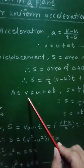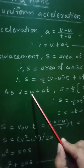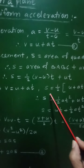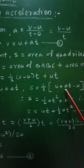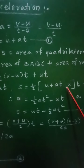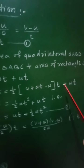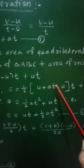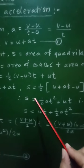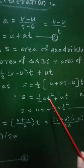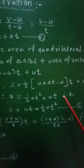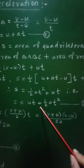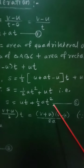From the first equation, v = u + at. Therefore, v is replaced by u + at. So S = half(u + at − u)t + ut. The u minus u cancels, leaving at times t, which is at². Therefore, S = half·at² + ut, written as S = ut + half·at² — equation number 2.